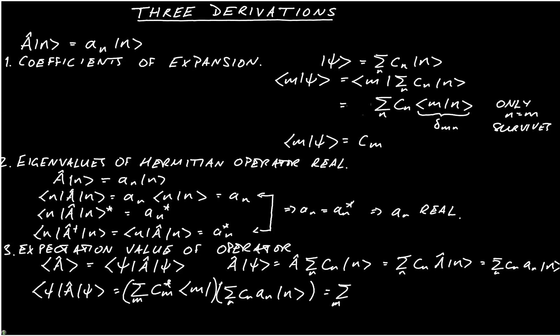That's going to equal the sum over m and n of c_m* c_n a_n ⟨m|n⟩.